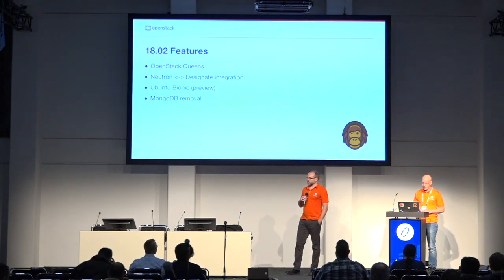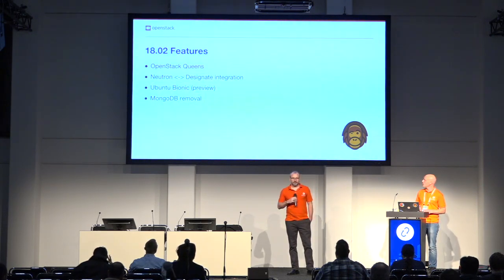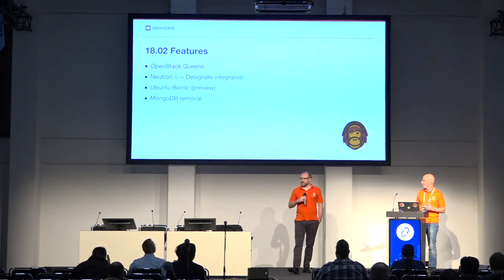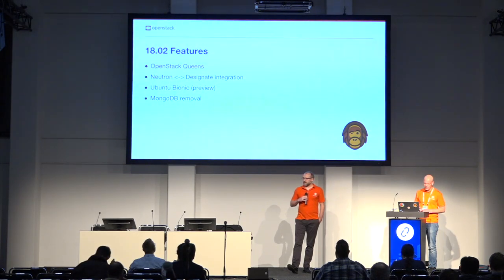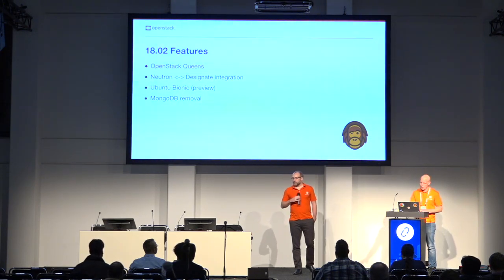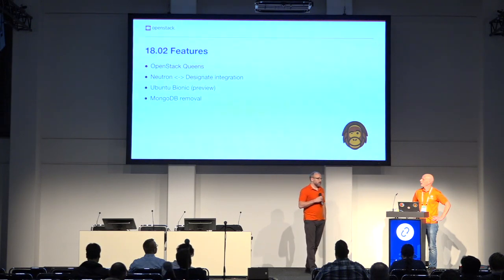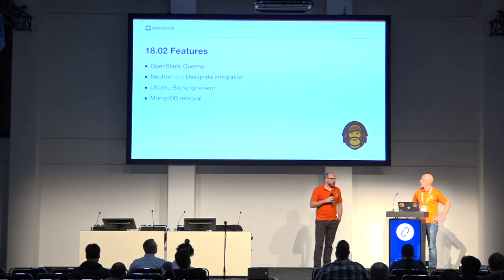For that release, we did the Neutron Designate integration. The Designate charm is one of the contributed charms — it's not done by the core team. We added support for Bionic, of course. And we untangled the requirement for using MongoDB with the telemetry stack so that we can use Gnocchi instead. Before 18.04 and up to Trusty Mitaka, you needed MongoDB. At that break, we switched to Gnocchi as that collector.